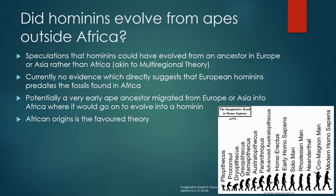There are all these different ape species outside of Africa, which has led some to speculate: did hominins evolve from an ancestor in Europe or Asia? This seems unlikely, as all the known fossils of hominins in Africa predate those found in Europe. It is possible that a very early ape ancestor migrated from Europe or Asia into Africa where it could go on to evolve into a hominin, but African origins is the favored theory.